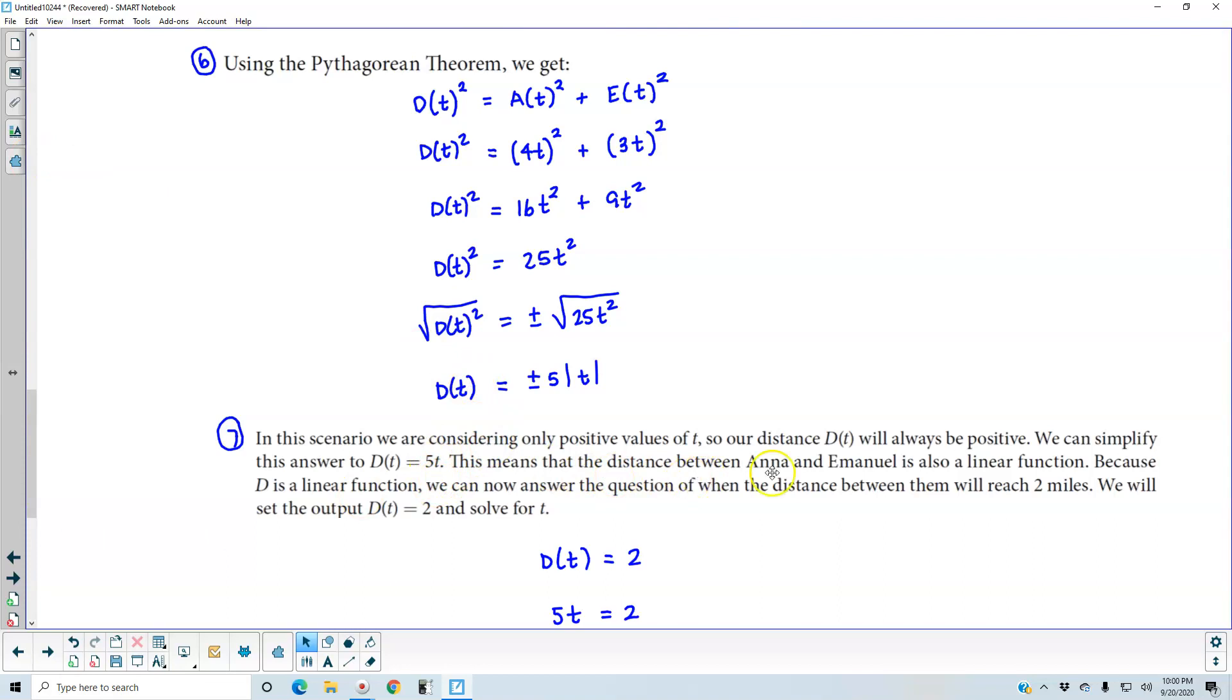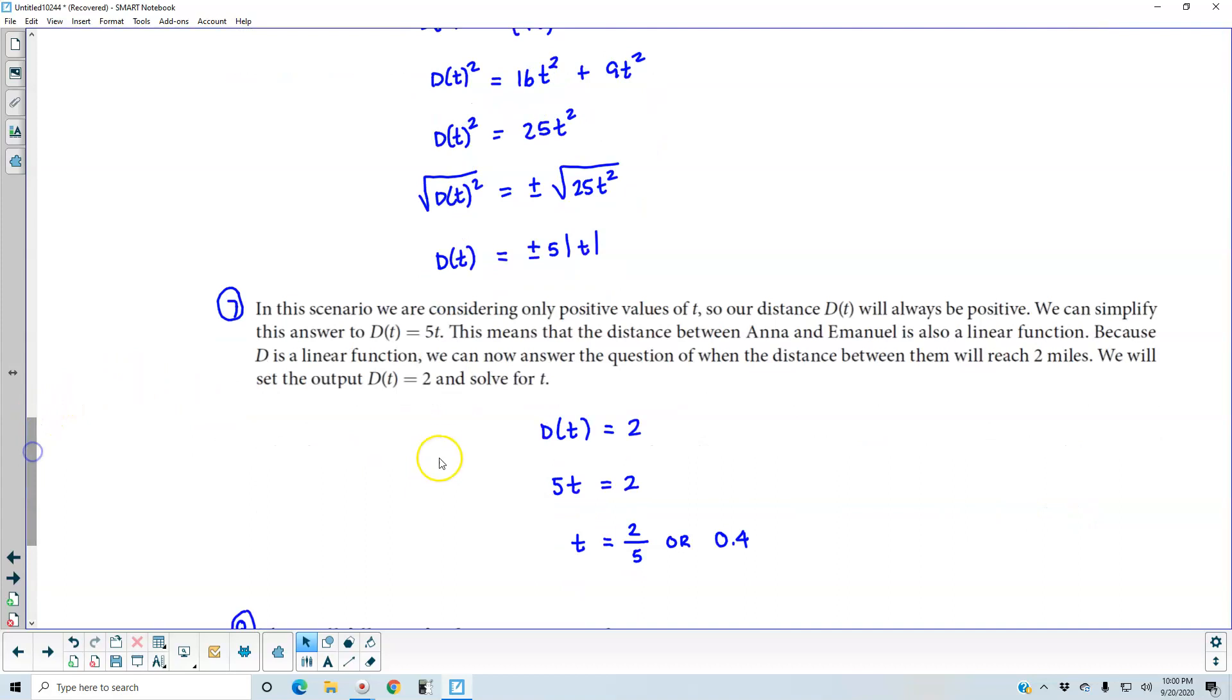This means that the distance between Anna and Emanuel is also a linear function. Because D is a linear function, we can now answer the question of when the distance between them will reach 2 miles. We will set the output D(t) equal to 2 and solve for t.